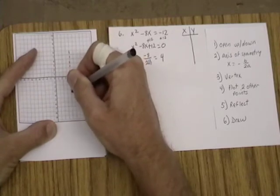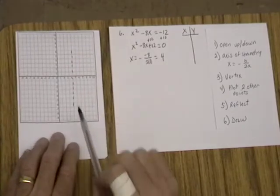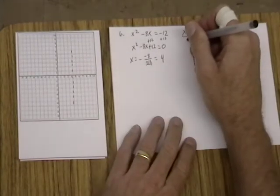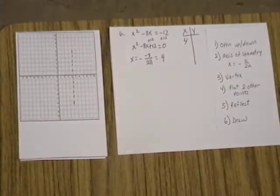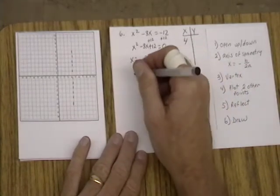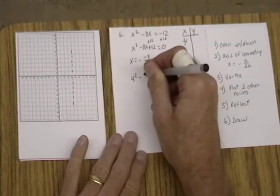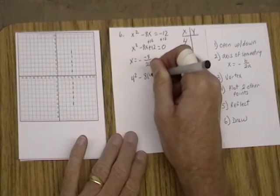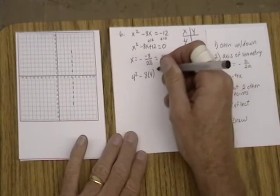So we know then that the vertex has to be somewhere on this axis of symmetry, so the x value of the vertex is going to be 4. Well, if x is 4, then what is y? So we put 4 squared minus 8 times 4 plus 12.